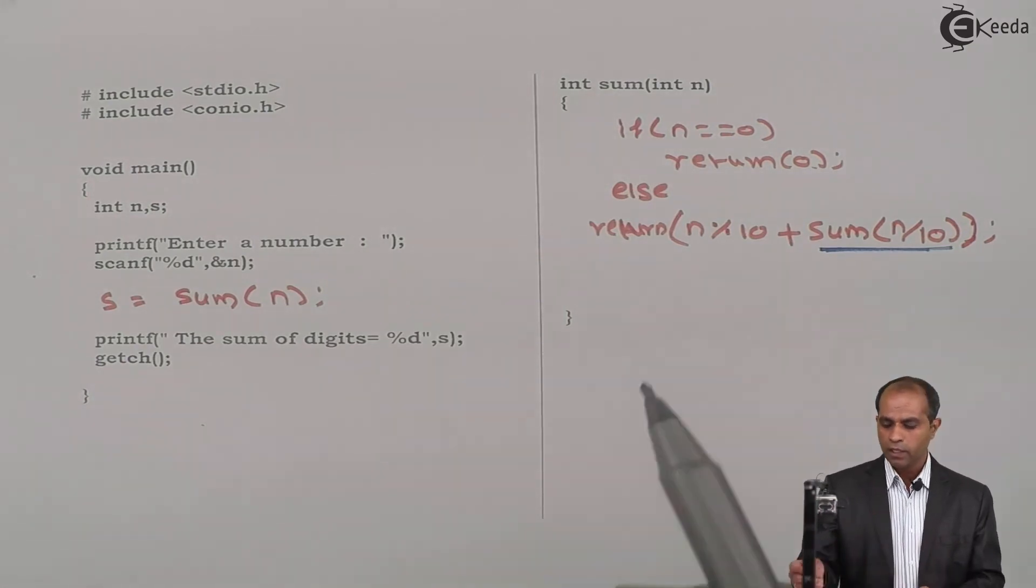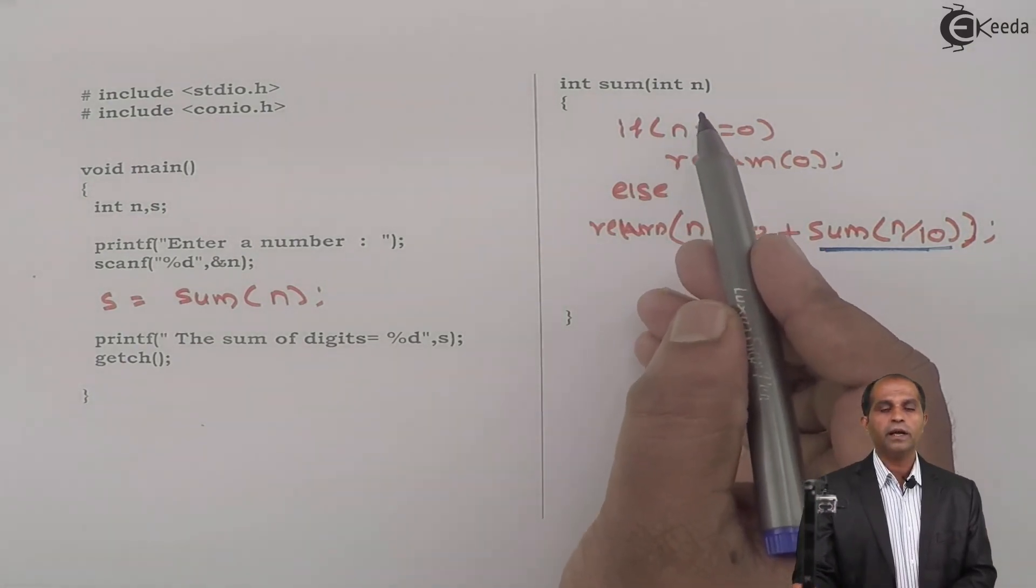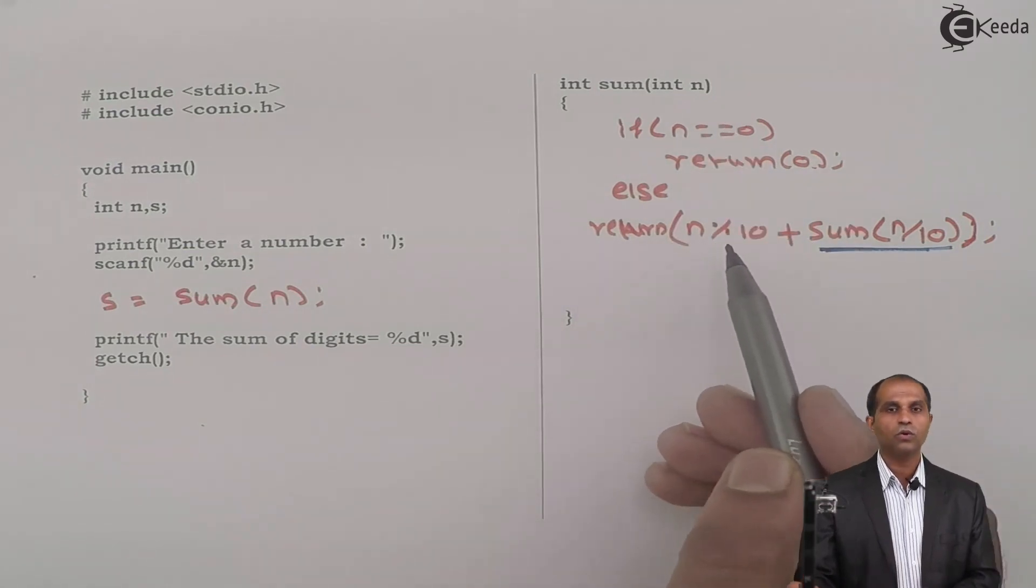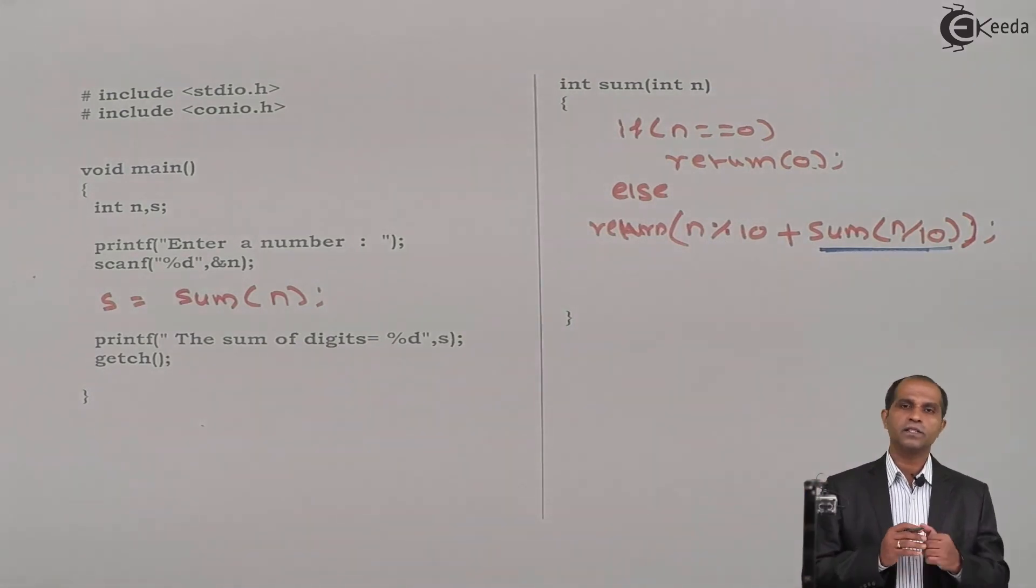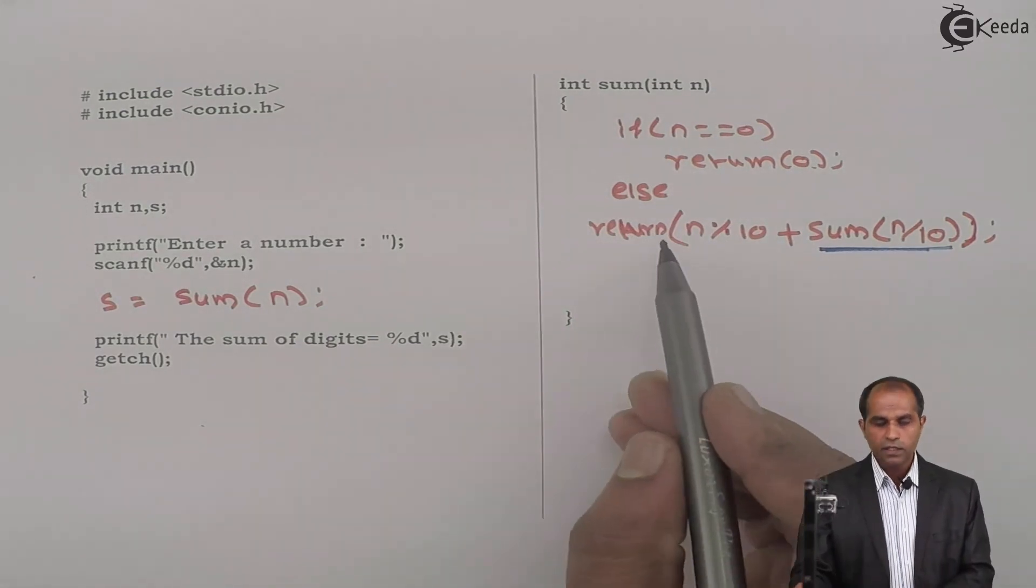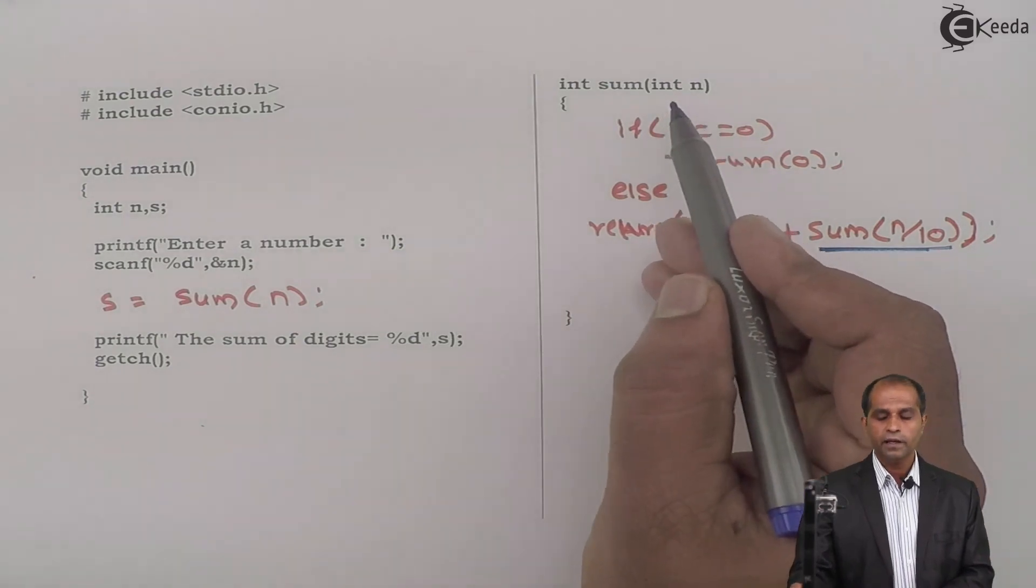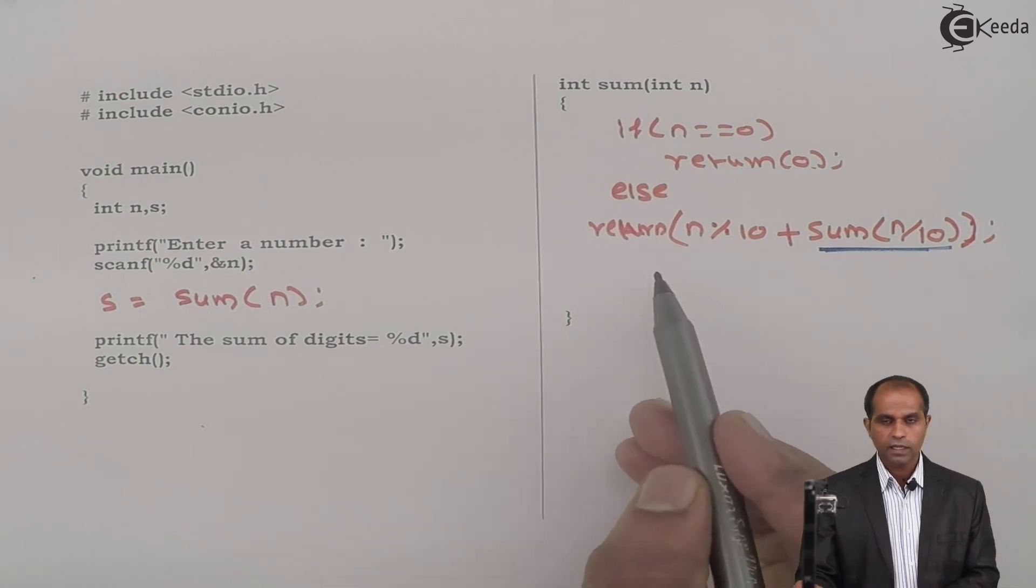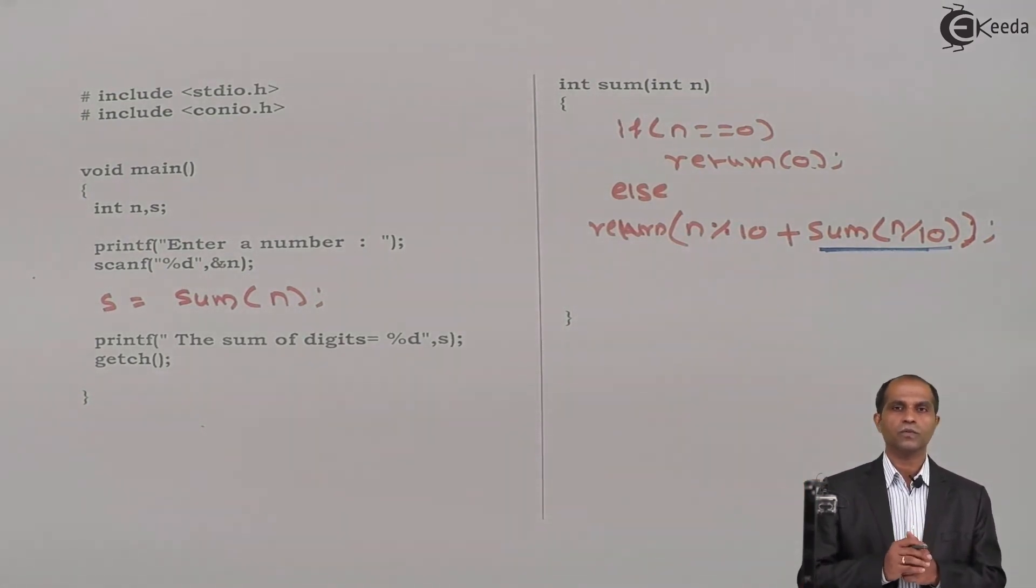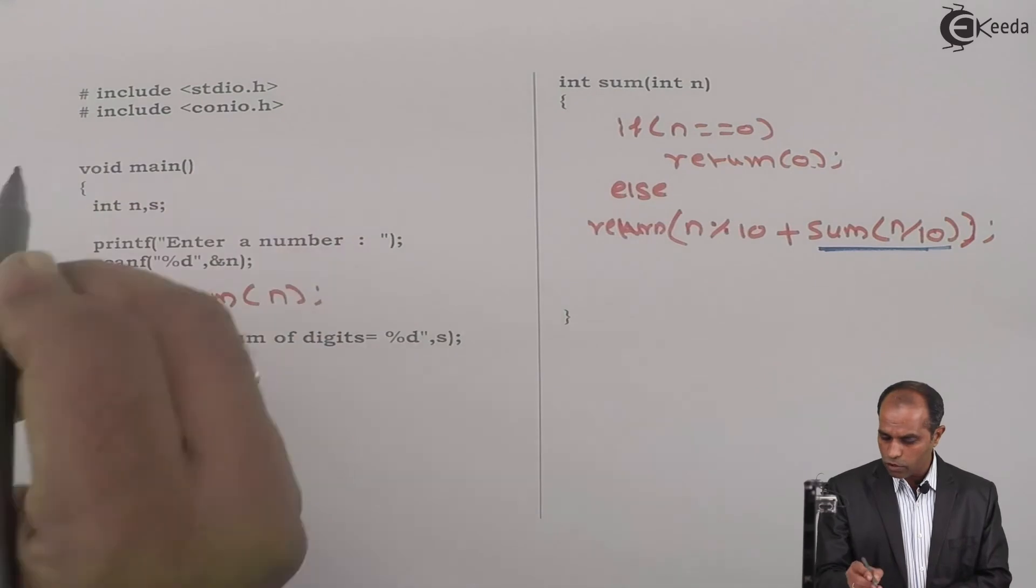I have included one new technique where you can avoid using int s and then s equals to s plus, or just do this particular operation. So when it comes back, it automatically returns these values. If you feel that these instructions are complicated, then say int s equals to 0, s equals to s plus n mod 10 plus sum of this and then you'll say return s. You can try that also. Or else you can compress this in a much more simplified format where return instructions can contain arithmetic expressions.